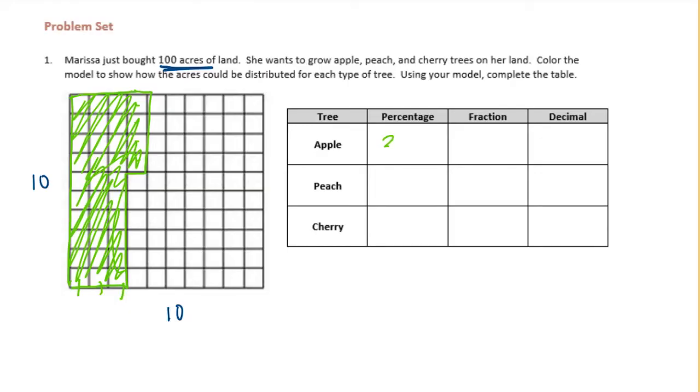So this is 34% of the acres. The fraction would be 34 hundredths. 34 out of 100 blocks are shaded. And then the decimal would be 34 hundredths.